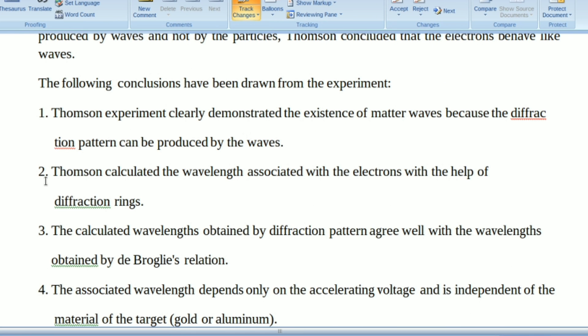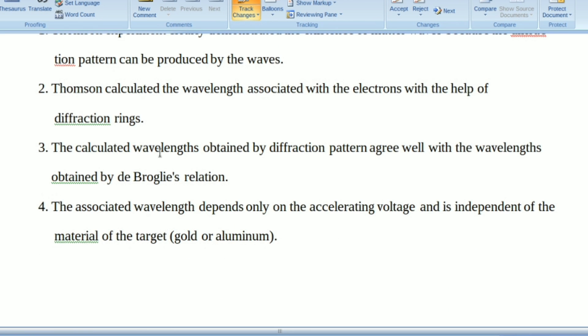Thomson calculated the wavelength associated with electrons with the help of the diffraction rings. The calculated wavelength obtained by the diffraction pattern agrees well with the wavelengths obtained by de Broglie's relation. According to de Broglie's relation, lambda equals h by mv, where h is Planck's constant.